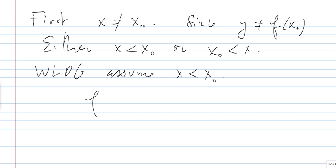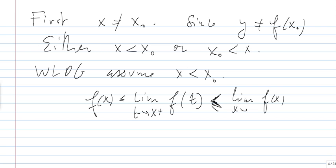So in this case, F(x) is going to be less than or equal to the limit of F(t) when t goes to x from the right, which is less than the limit, because they are different, which is less than or equal to the limit of F(x) when x goes to x0 minus. Which is equal to what? To little m.